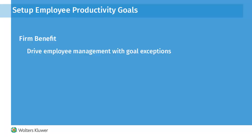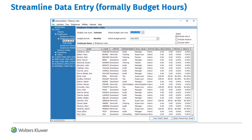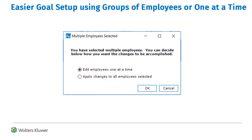Let's look at changes in the setup of employee goals. Setup Goals was formerly Employee Budget Hours. The header displays the firm year and period type designated in the firm setup for reporting. Select the period for entering the goals, then select employees and click Enter Period Hour Goals. If you selected multiple employees, enter goals one at a time or enter like goals for groups of employees in a single stroke.